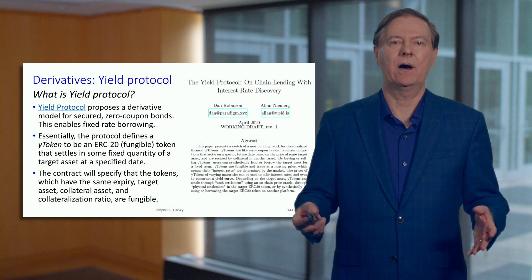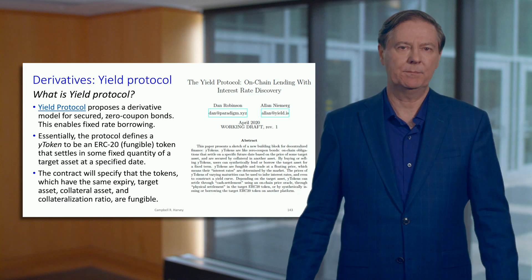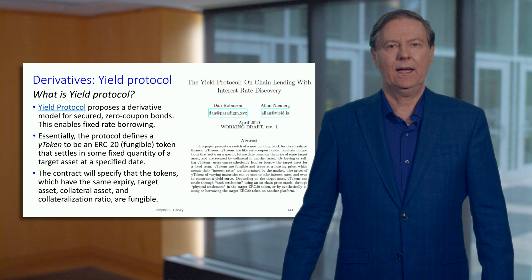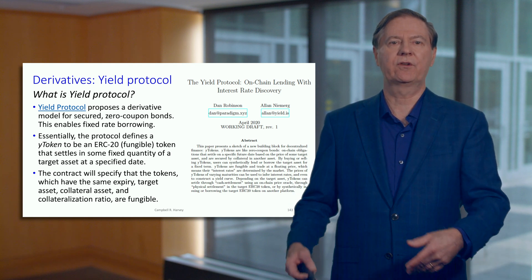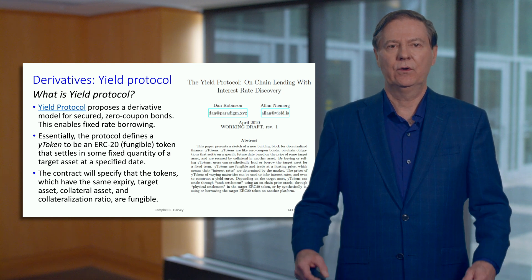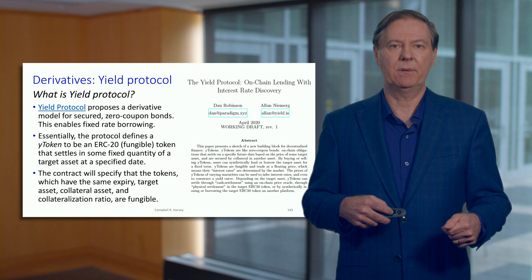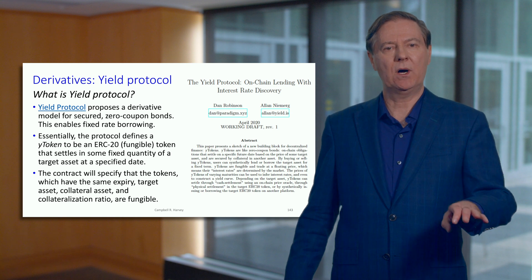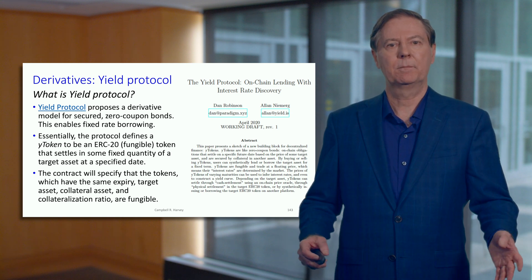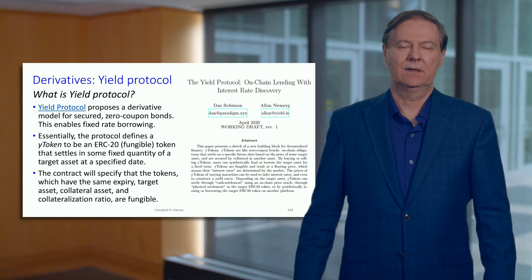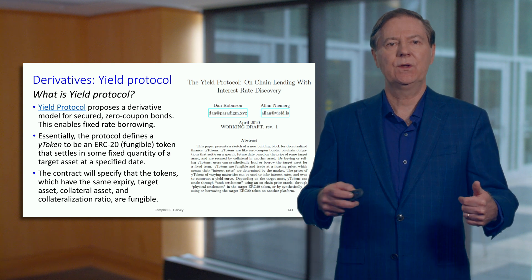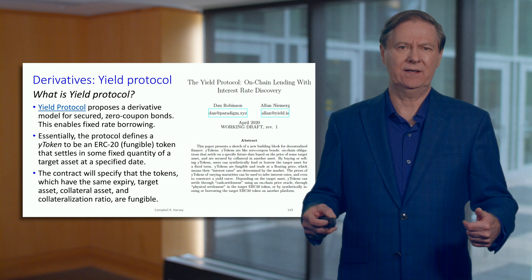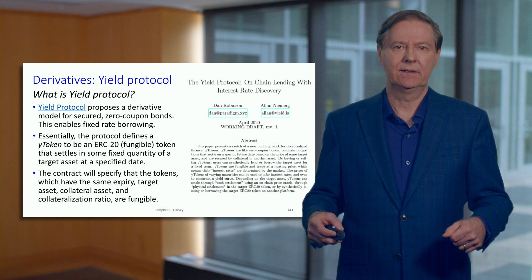A zero-coupon bond works in the following way. Suppose the bond has got one year to maturity, and the price at maturity or the principal is worth 100. The price today to actually buy that bond is $90. So if you buy that bond at 90 and hold it for a year, there's no coupon, but at the end of the year you get 100. If you hold to maturity, you've locked in a rate, and that rate is 11.1% — just 100 divided by 90, subtract 1.